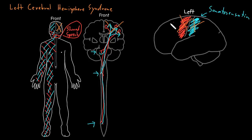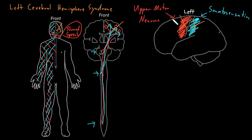The upper motor neurons and the somatosensory tracts are similar in that they start and finish on other sides of the body and the brain. So the ones that involve the left cerebral hemisphere generally involve the right side of the body.